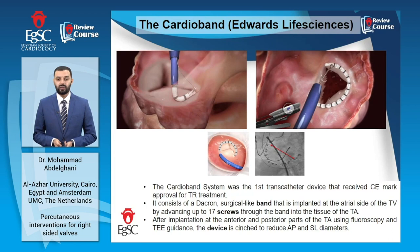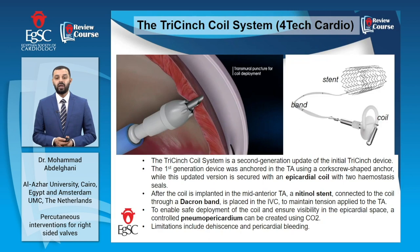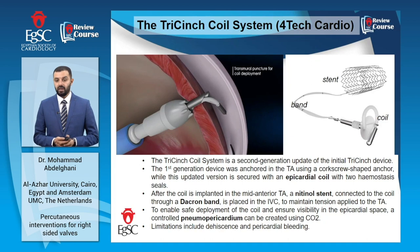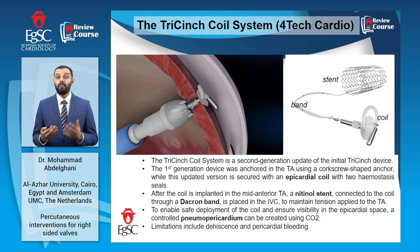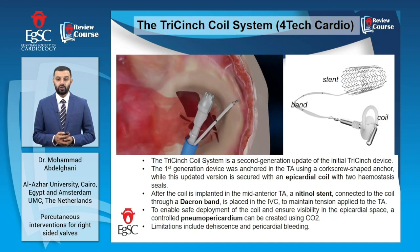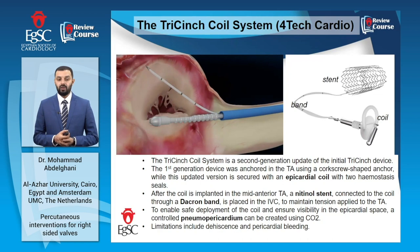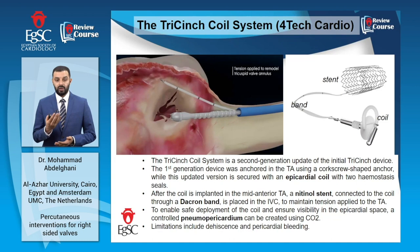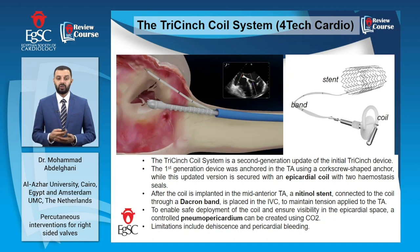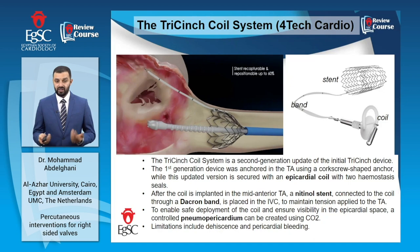The TriCinch coil system is a next-generation update of the initial TriCinch device. While the first-generation device was anchored into the tricuspid annulus using a corkscrew-shaped anchor, this updated version is secured with an epicardial coil with two hemostatic seals. After the coil is implanted in the mid-portion of the tricuspid annulus, a nitinol stent connected to the coil through a Dacron band is placed in the inferior vena cava to maintain tension applied to the tricuspid annulus and thus maintain the reduction in annular diameter. Some operators induce controlled pneumopericardium using CO2 to enable safe deployment of the coil and ensure visibility in the epicardial space. Obvious limitations include dehiscence and pericardial bleeding.